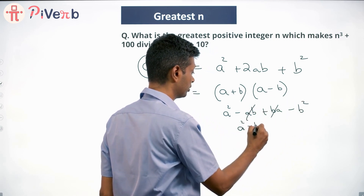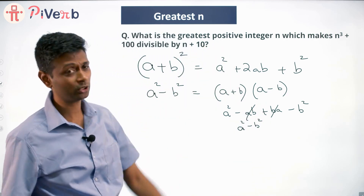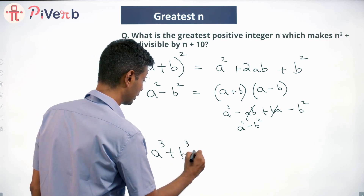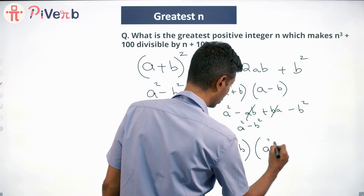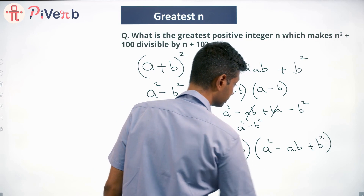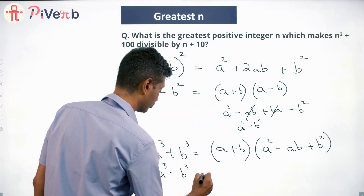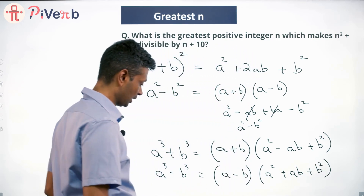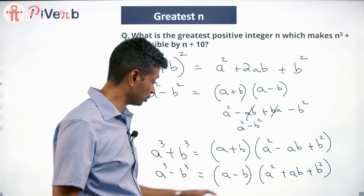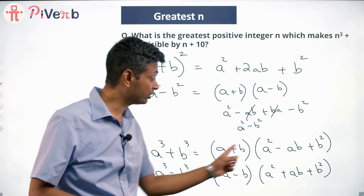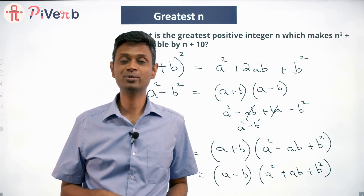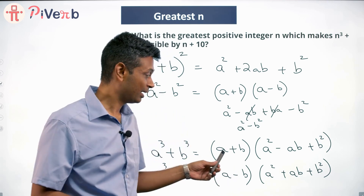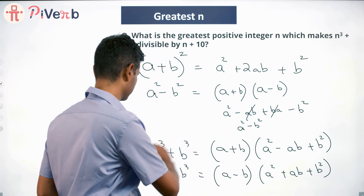The minus ab and plus ab cancel, and you have a squared minus b squared left. Why am I doing all this? Because our problem has n cubed. Now, a cubed plus b cubed can be factorized as (a+b)(a squared minus ab plus b squared), and a cubed minus b cubed can be factorized as (a minus b)(a squared plus ab plus b squared). This is an identity — it always holds. Multiply it out and convince yourself.